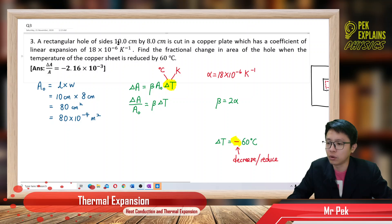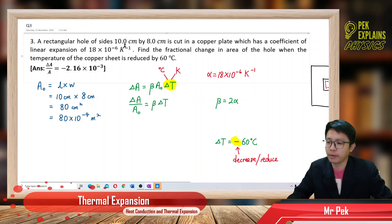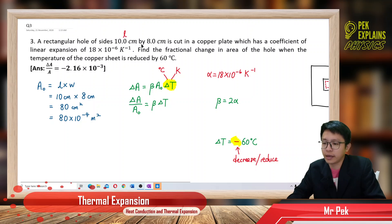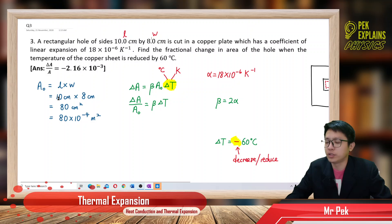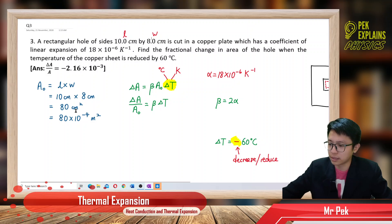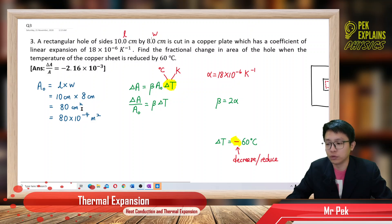First, we identify what information is given to us. We have the rectangular hole sides 10 cm by 8 cm — that's length by width. We can find the initial area: length times width = 10 cm × 8 cm = 80 cm². In SI units, cm is 10⁻² m, so cm² becomes 10⁻⁴, giving us 80×10⁻⁴ m². So we already have A₀.